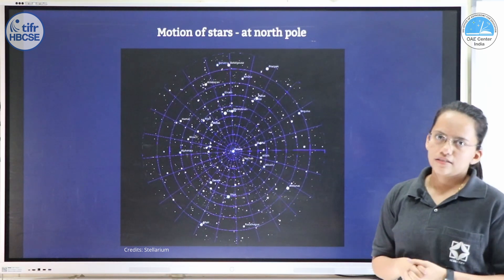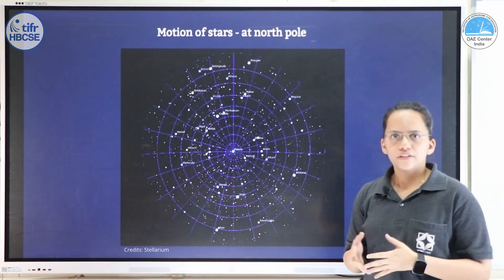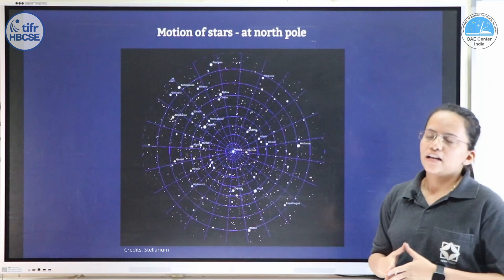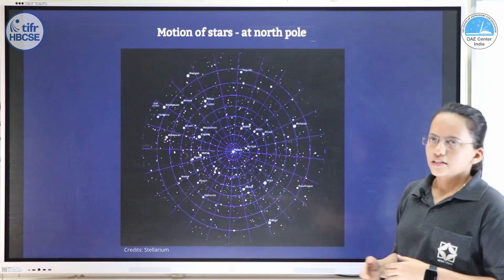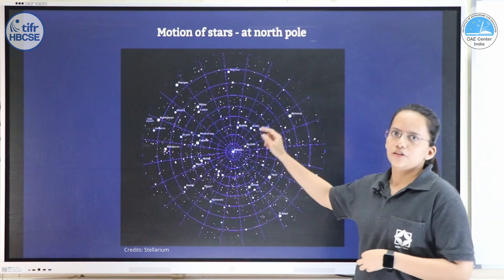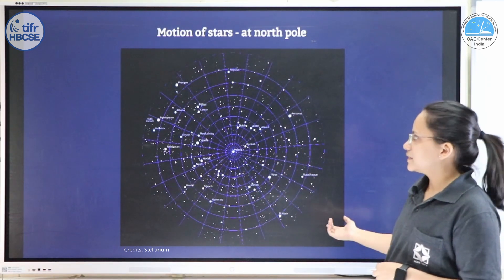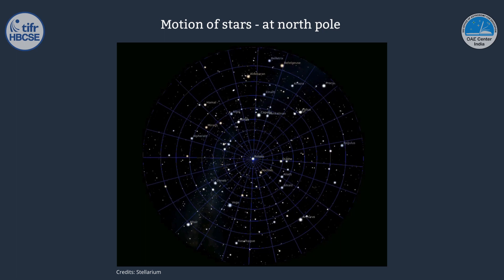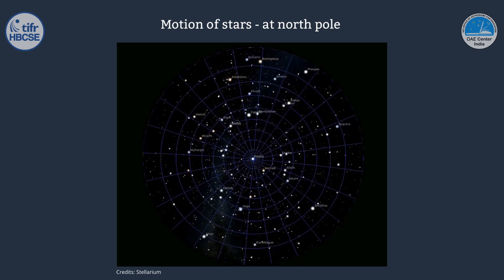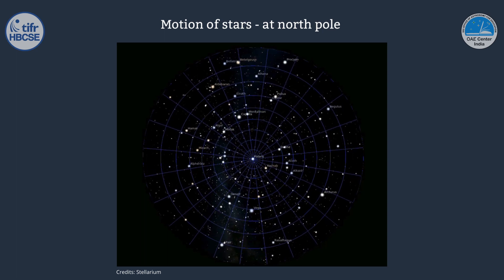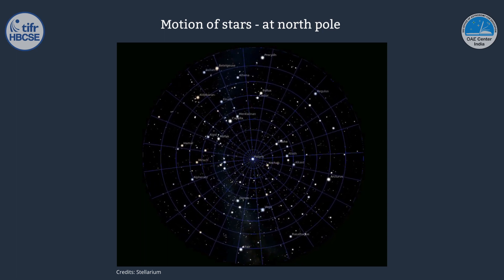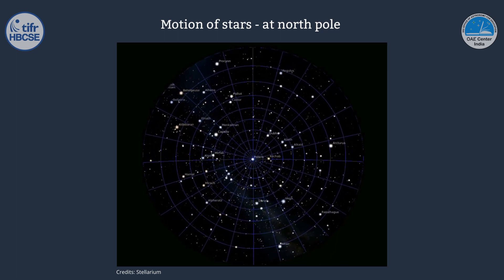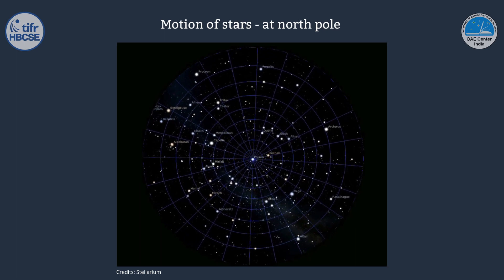What about the motion of the stars — will they appear to move differently from different locations? At the north pole, the pole star is at zenith, and all stars are seen going around the pole star forming concentric circles. They will neither rise nor set; they will always be in the sky. These stars are called never-setting stars. Conversely, all stars below the horizon will be never-rising stars for a person at the north pole.